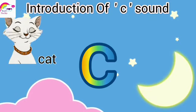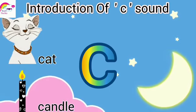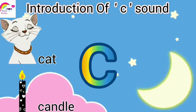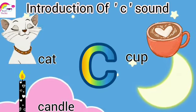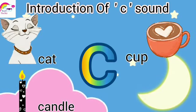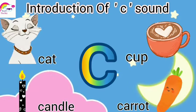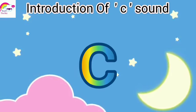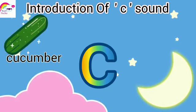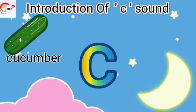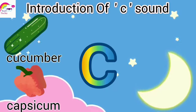Now we are going to learn about the vocabularies from the K sound. K is for cat. K is for candle. K is for cup. K is for cucumber. K is for capsicum.